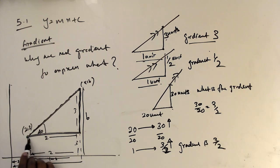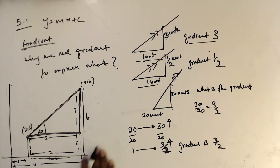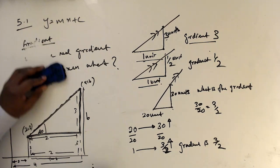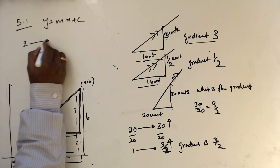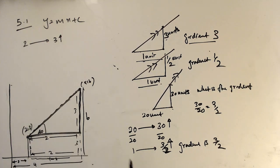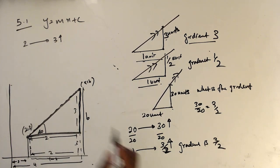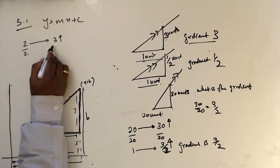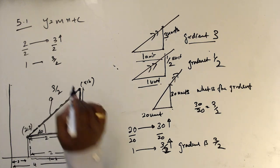From the rectangle, the horizontal distance is 2 and the vertical distance is 3. So if you walk 2 units across, you go 3 units up. To find the gradient — how many units go up per 1 unit — we divide both sides by 2. So gradient = 3 over 2.